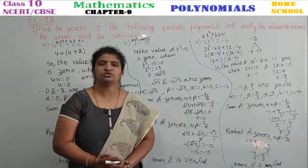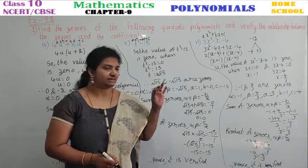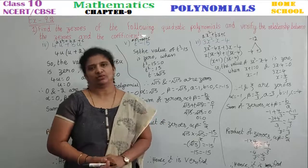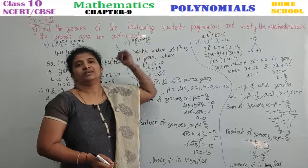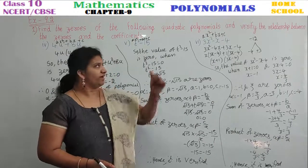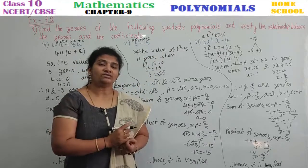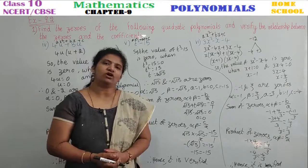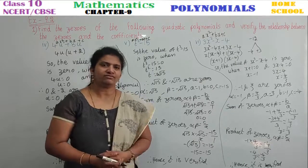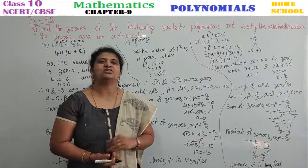We have completed all 6 problems. For any type of polynomial given, find the zeros in this pattern. A tiny difference to note: a polynomial is an expression with terms, whereas it becomes a quadratic equation when equated to 0. In the polynomial chapter, we call them zeros; in quadratic equations, we call them roots. Both have the same meaning.